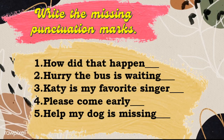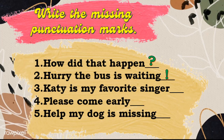You did a great job! Now let's try identifying the punctuation marks to be used for the following sentences. You may pause this video while answering the activity. Number one: how did that happen? — the correct punctuation mark is a question mark. Number two: hurry, the bus is waiting! — that should be an exclamation point. Number three: Katie is my favorite singer. — that should be a period. Number four: please come early — that should also be a period. And for the last one: help, my dog is missing! — that should be an exclamation point.